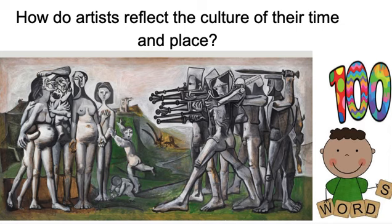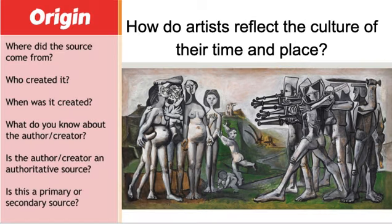This picture is Picasso's response to the American involvement in the Korean War. In this picture we can see a lot of symbolism. This section should be about 100 words, and those 100 words will break down into 25 words for each section. Your first 25 words could look at the origin aspect of the analysis frame. Have a read of this slide to see what could be in the origin section.